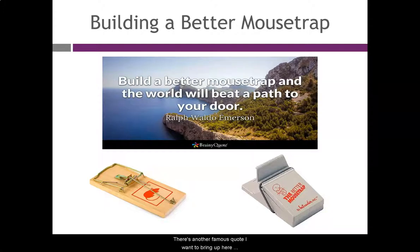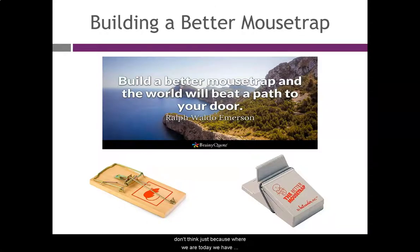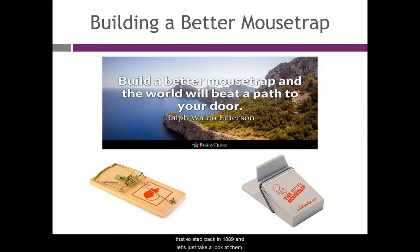There's another famous quote: 'Everything that can be invented has been invented.' Who do you think said that, and when? It was said by Charles Duhl, the commissioner of the U.S. Patent Office — the people who give out patents for new ideas. He said it back in 1889. The reason I bring that up is: don't think that just because we have so many great things and great new technology today, it's going to be really hard to come up with something. There's always opportunity to invent new things. This guy thought in 1889 that everything had been invented.